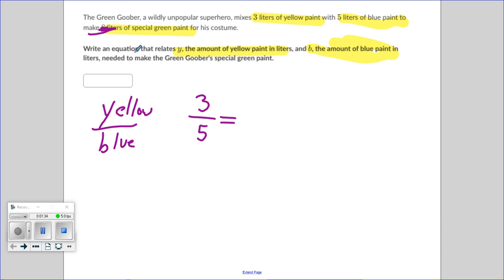And I said, write an equation that relates Y, the amount of yellow paint, so that would be Y is yellow, and B, the amount of blue paint, so B is blue.